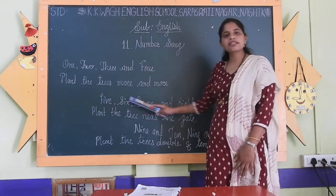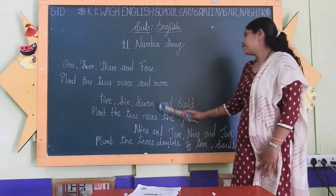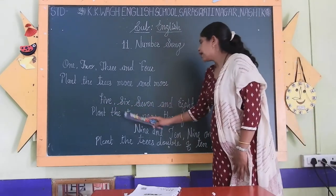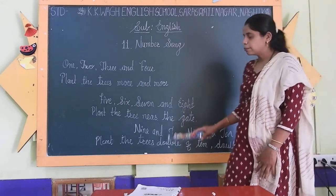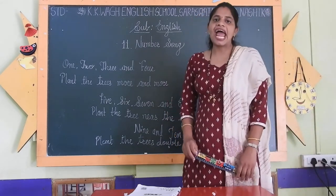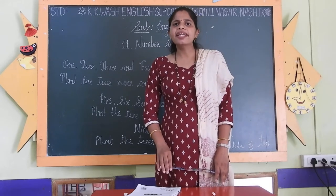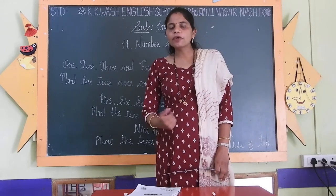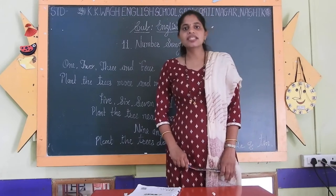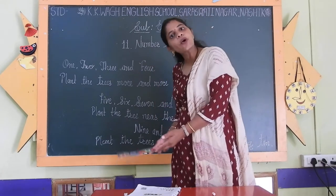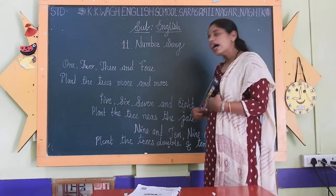Now let's see the second stanza. 5, 6, 7 and 8, plant trees near the gate. It means we have to plant trees near the gate. Why? Because when we come back home, these trees welcome us.